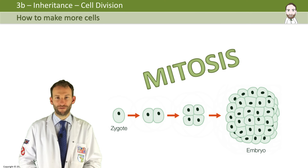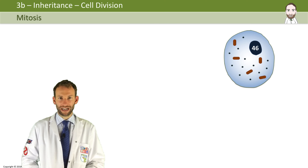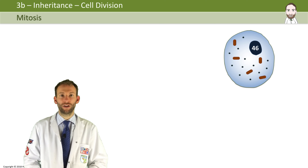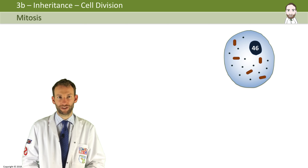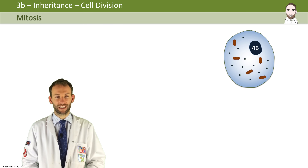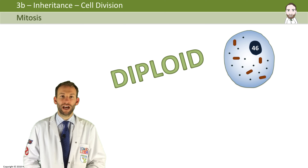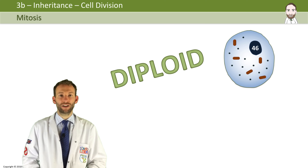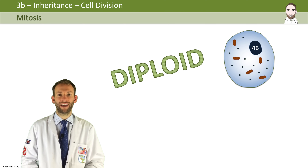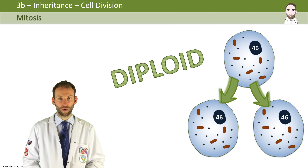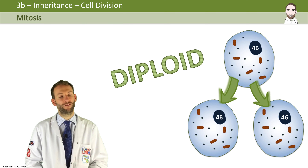Mitosis is a type of cell division. What happens is you take a cell which has 46 chromosomes in, because all human body cells have 46 chromosomes, apart from gametes like sperm and egg, and red blood cells which don't have a nucleus at all. All other cells have 46 in, and we call them diploid cells. When doing mitosis, it simply copies that one cell into two genetically identical diploid daughter cells — one cell with 46 becomes two cells with 46.